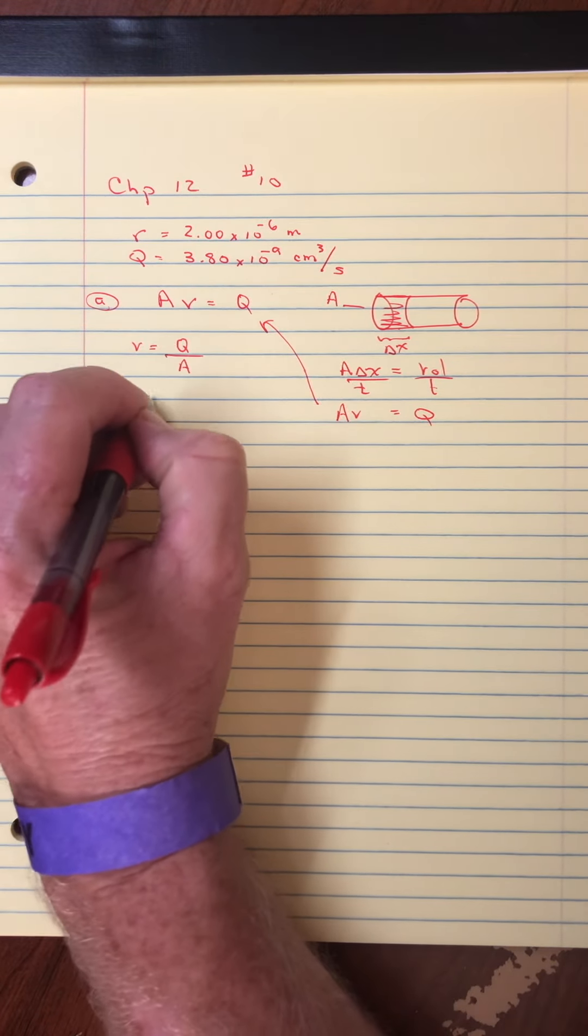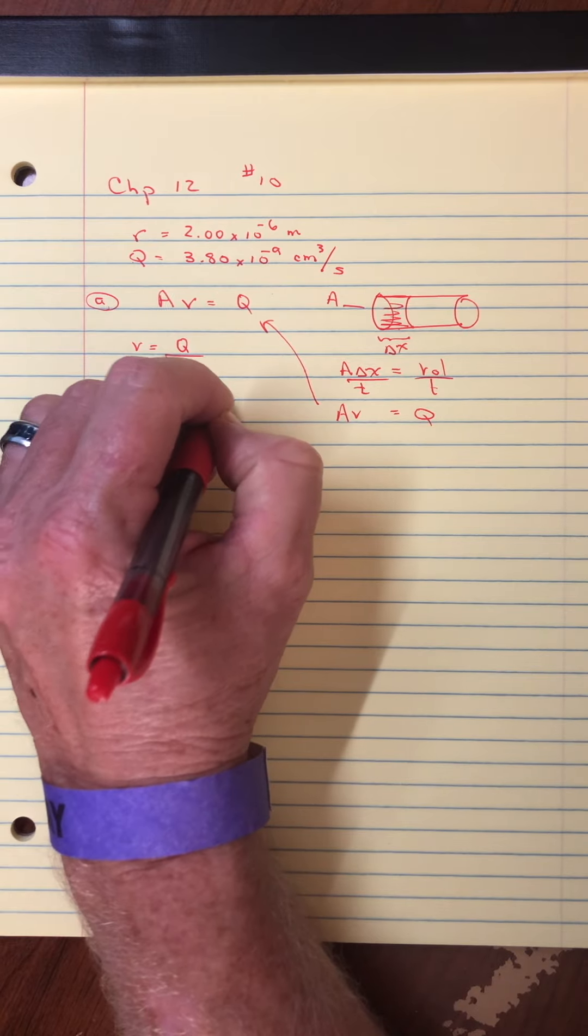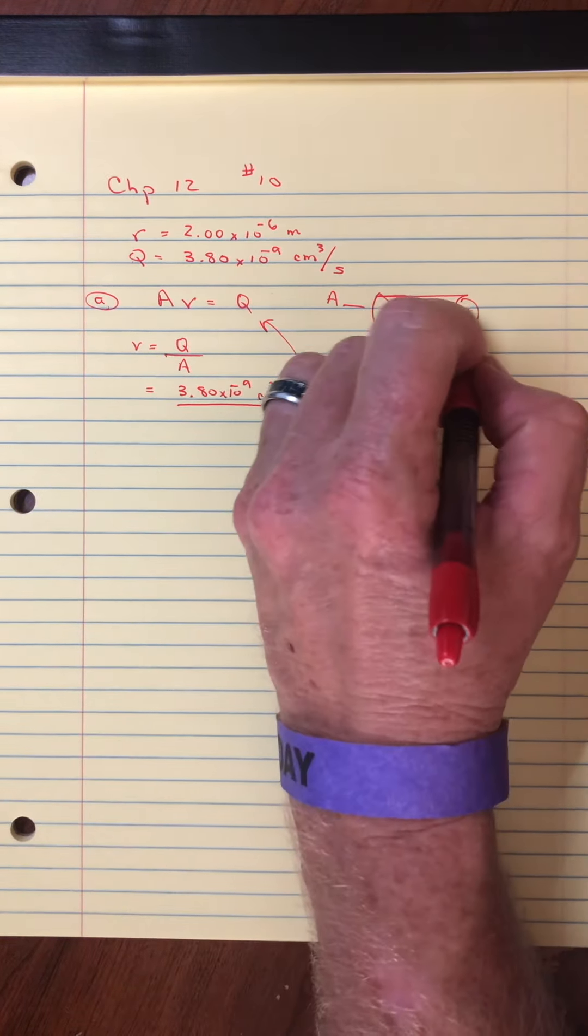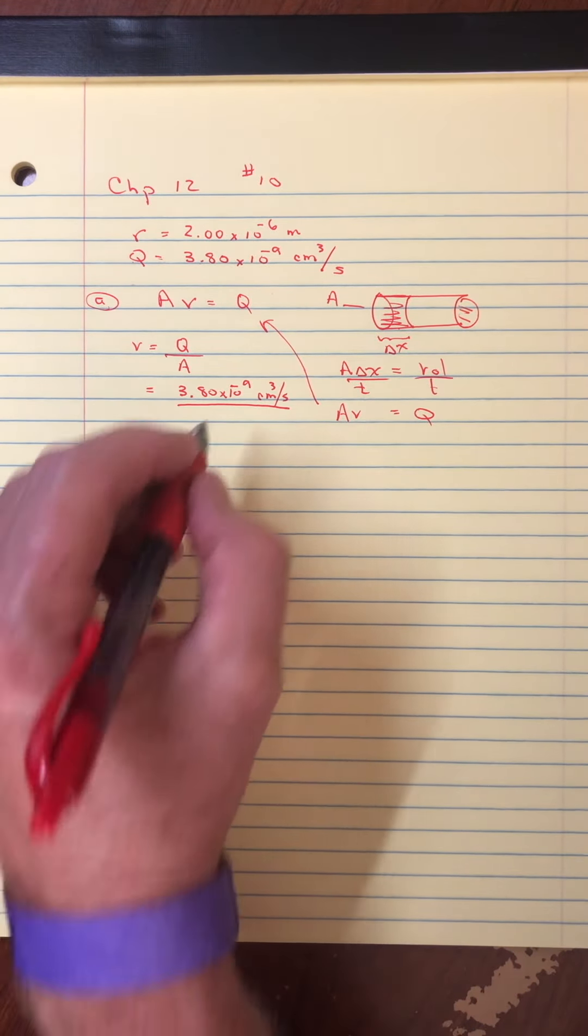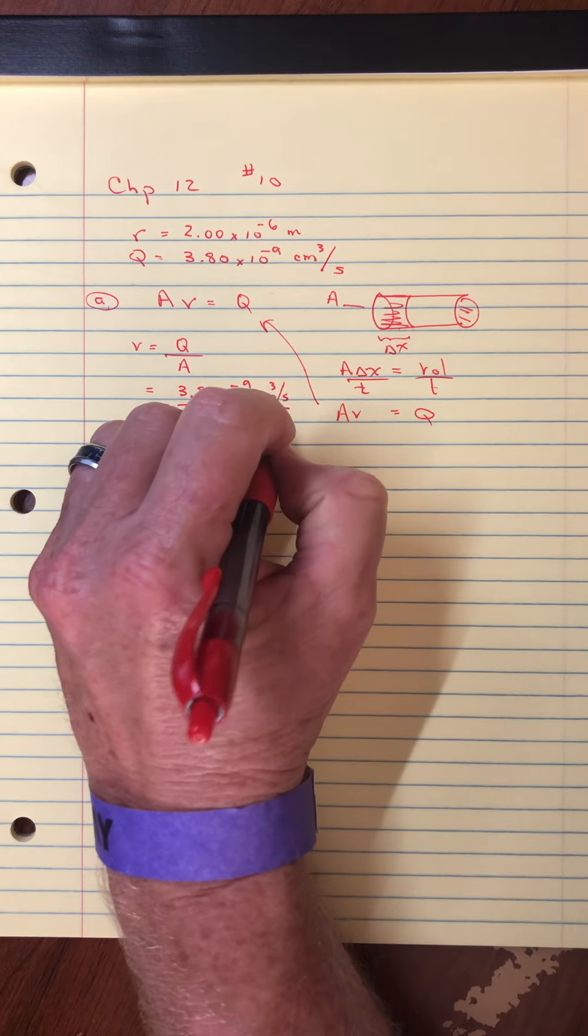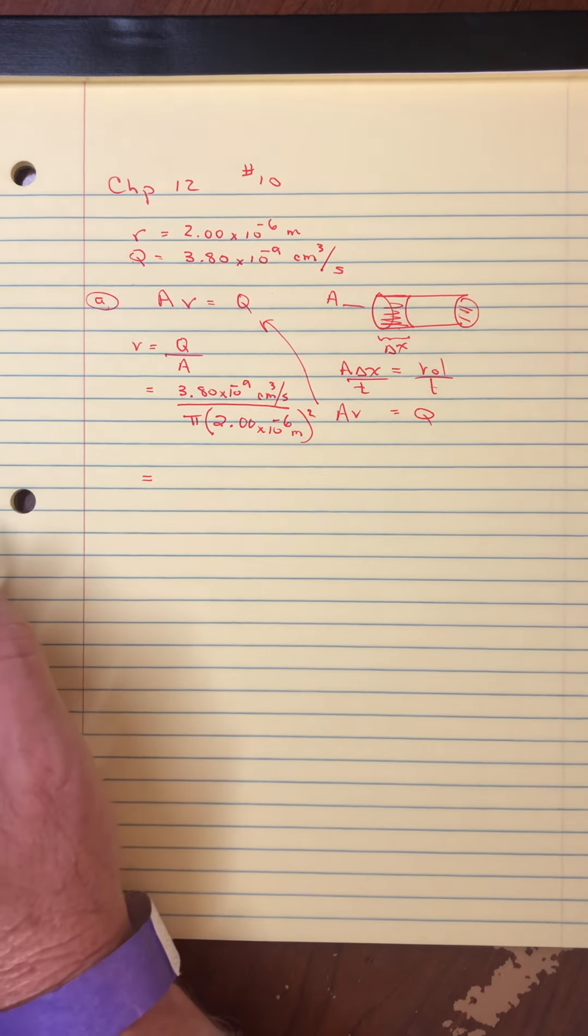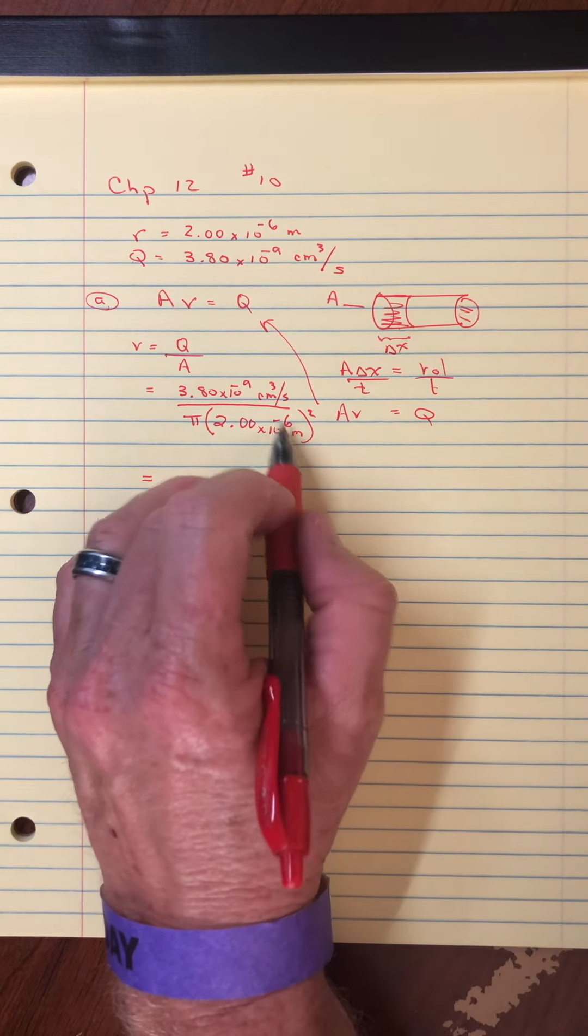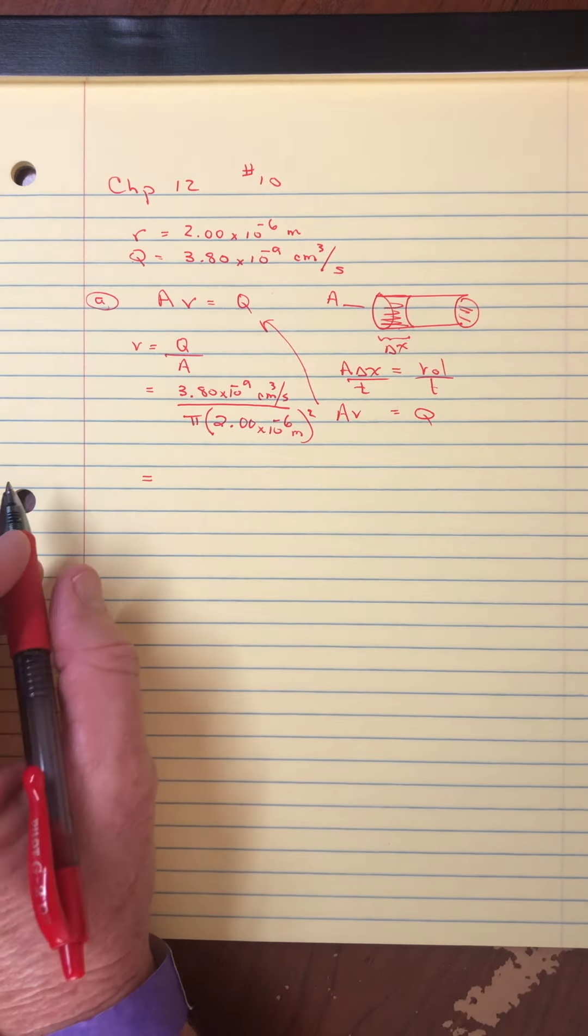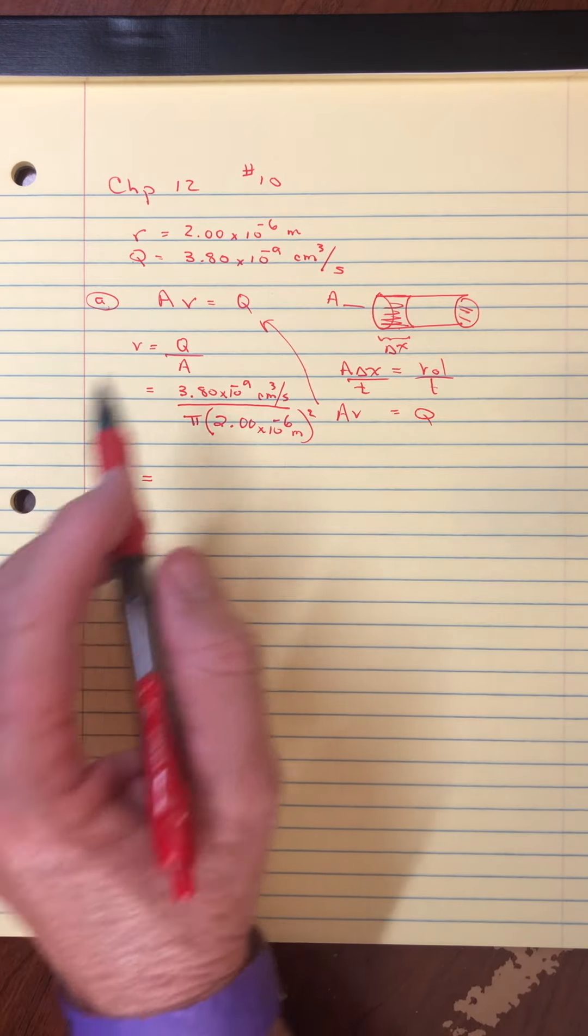So the speed would be the flow rate over the cross-sectional area. So coming back over here, the flow rate is 3.80 times 10 to the minus 9 cubic centimeters a second. And the area, assuming it's a round tube, and so I think it is a capillary, would be pi R squared. And in this case, R is 2.0 times 10 to the minus 9 meters squared. And so we need to be a little careful with our unit, since we've got meters down here and centimeters up here. You know, I bet this is a typo.